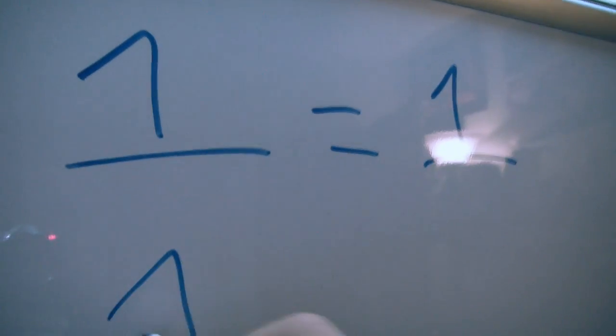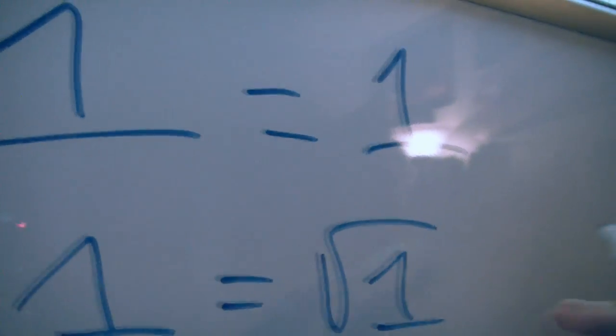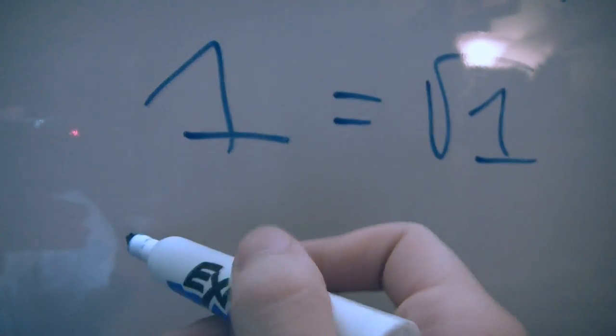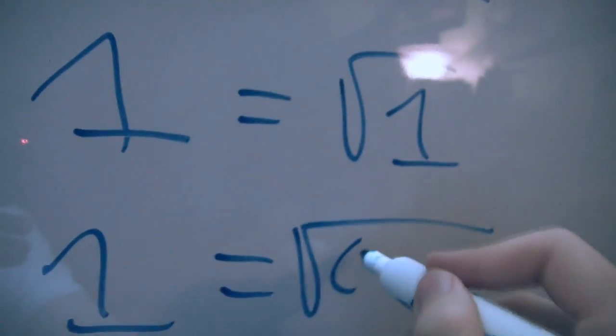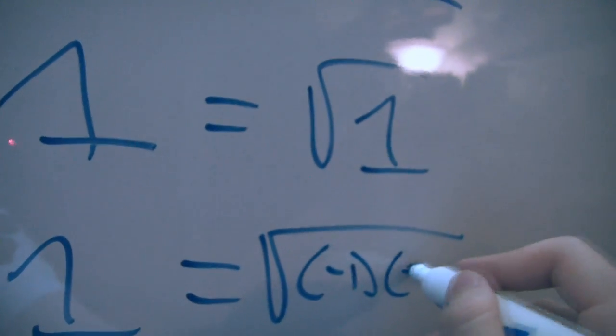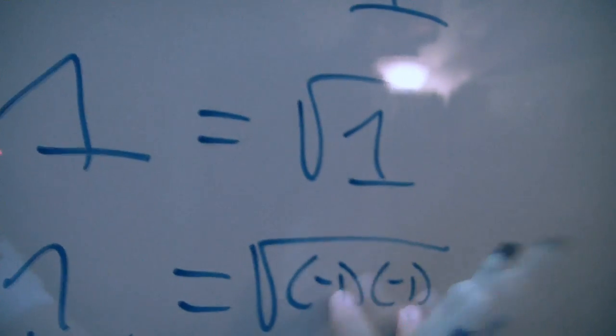And now we are going to take 1 equals the square root of 1, square root of 1 being 1, and now that we have 1 equals square root of negative 1 times negative 1, that equals 1. You're going to get that so it keeps it all nice and equal.